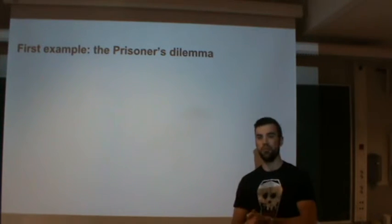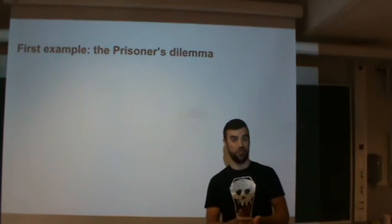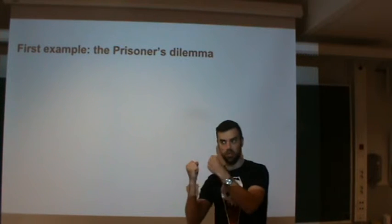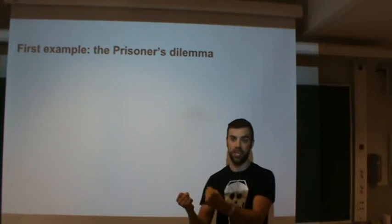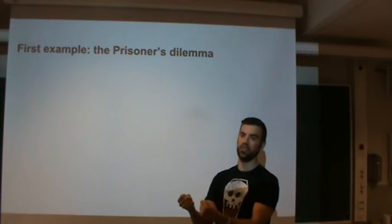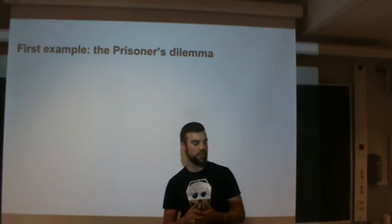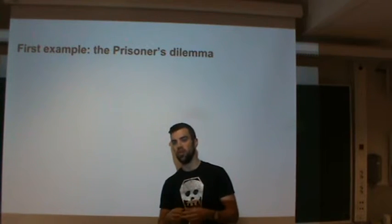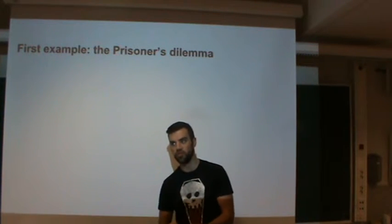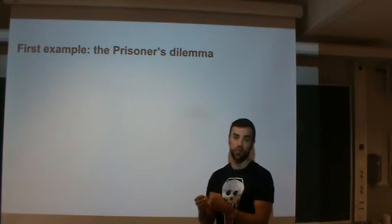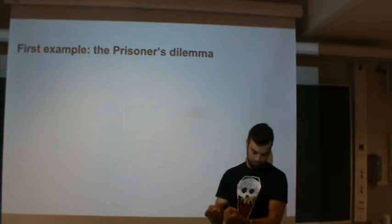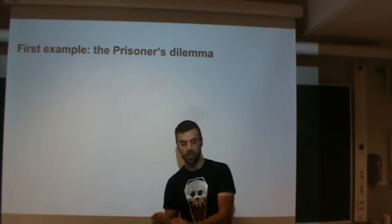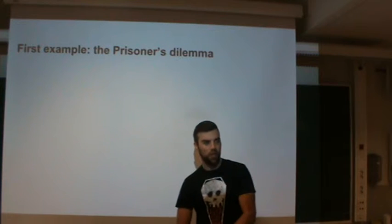Prisoner's Dilemma. The setup is the following: two convicts, A and B, have been arrested by the police. But the police don't have enough evidence to charge them with the principal crime, so they are going to charge them with the lesser crime, making the prison sentence only one year.